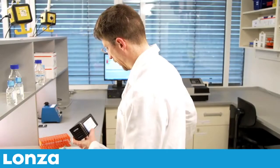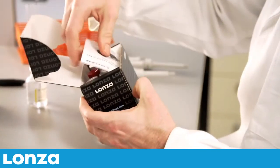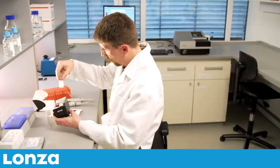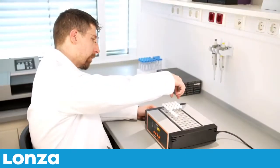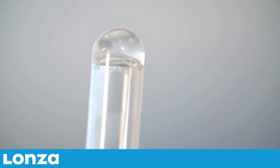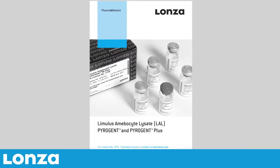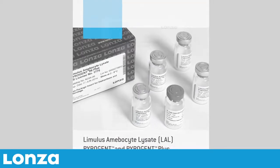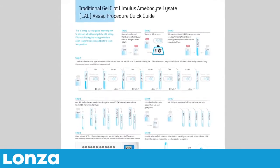The Gel Clot assay is run in depyrogenated glass tubes that are placed in a water bath or dry heat block at 37 degrees Celsius. After a one-hour incubation period, the tubes are inverted 180 degrees. A firm clot that stays in the bottom of the tube indicates a positive reaction. The Pyrogent Assay Package Insert and Quick Guide provide complete, easy-to-follow instructions for performing the assay.